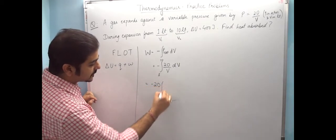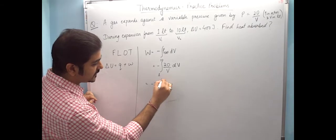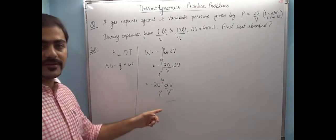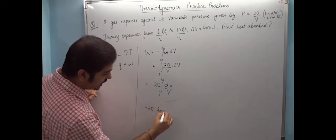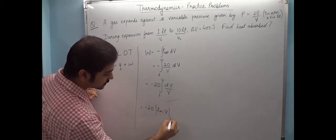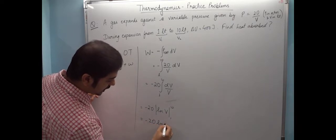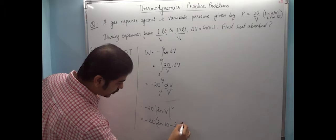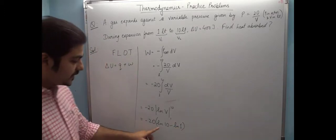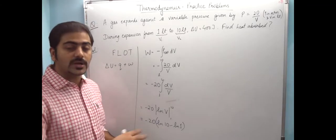That is minus 20 integral of dV by V from 1 to 10. Now the integration of dV by V is ln V from 1 to 10. So this gives me minus 20 times (ln 10 minus ln 1).